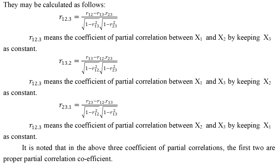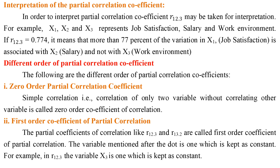The coefficient of partial correlation between x1 and x2, keeping x3 constant; between x1 and x3, keeping x2 constant; and between x2 and x3, keeping x1 constant. It is noted that in the above three coefficients of partial correlations, the first two are proper partial correlation coefficients.